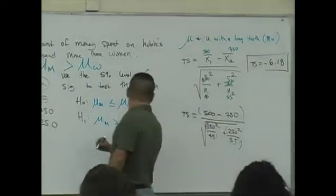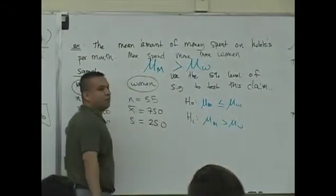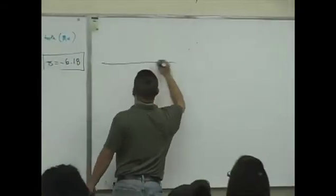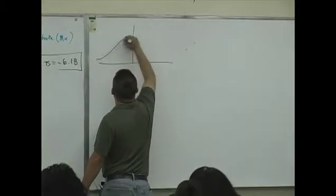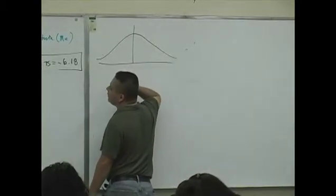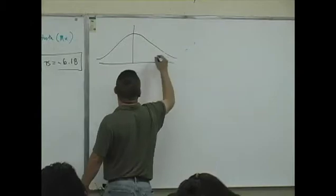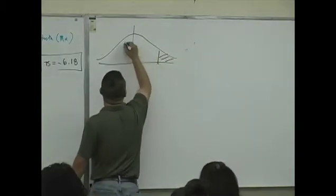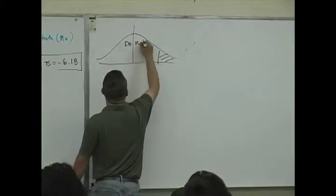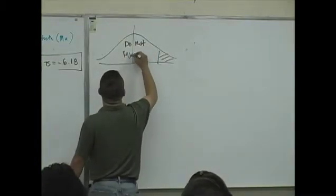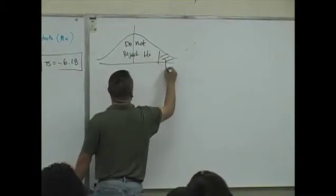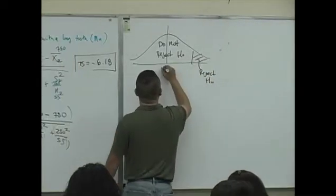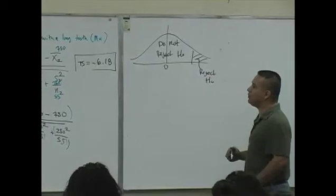So, where does that live on your decision rule? Oh, we didn't do the decision rule. Oh. All right. Is it a left tail or right tail? How do you know it's pointing to the right? Do not reject or no. Here's your reject or no. Zero, Z. What's the critical value going to be?